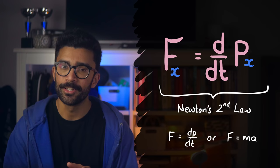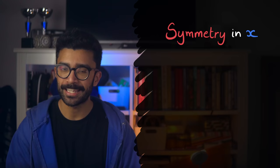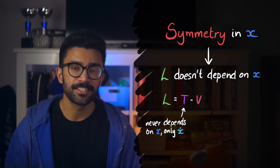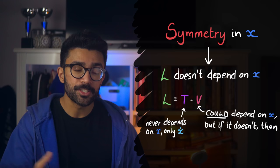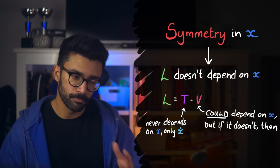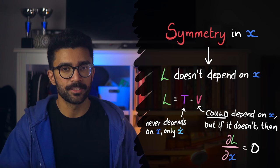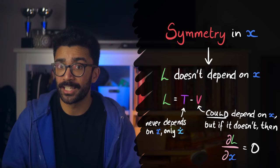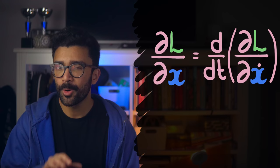If our system has some sort of symmetry in one coordinate, like X, then we can think of this as the Lagrangian not depending on X. The kinetic energy doesn't depend on position anyway, and the potential energy, in this case we're saying, does not change depending on the position of our system, or objects within our system. Then this means that the term ∂L/∂X is equal to zero. Because remember, ∂L/∂X literally measures how L changes depending on X. And we're saying L doesn't change depending on X.